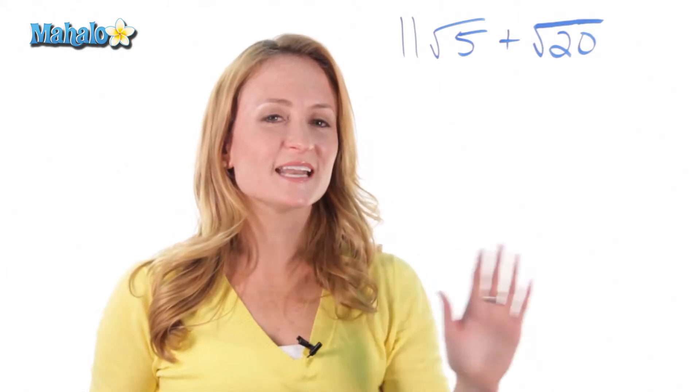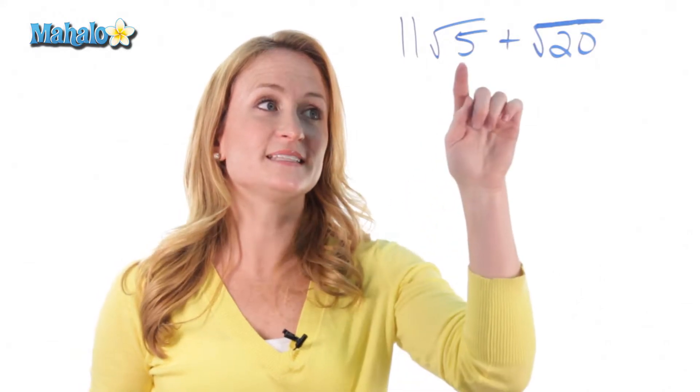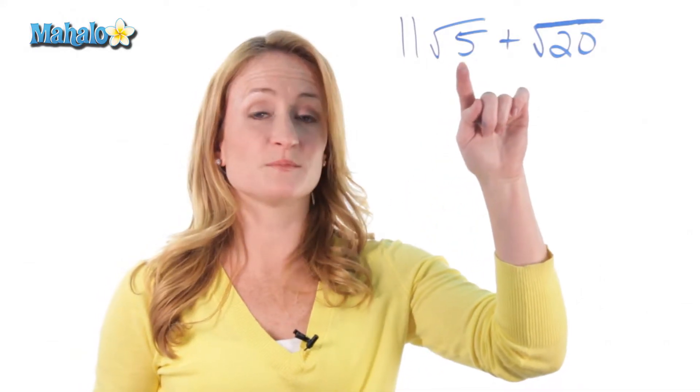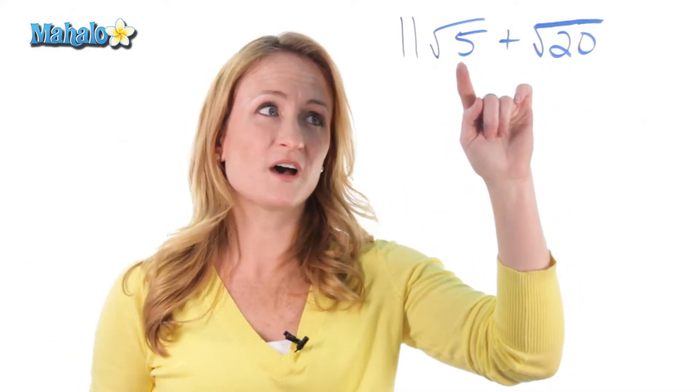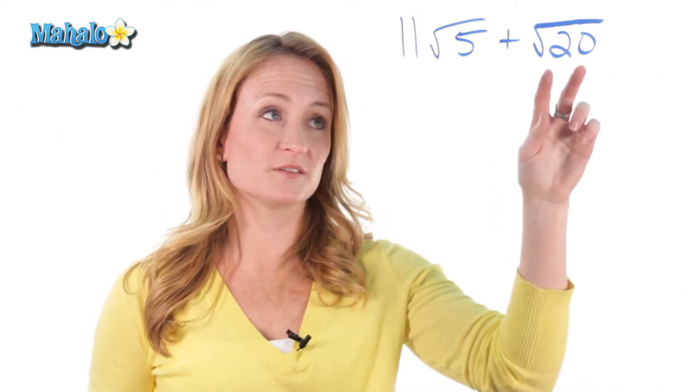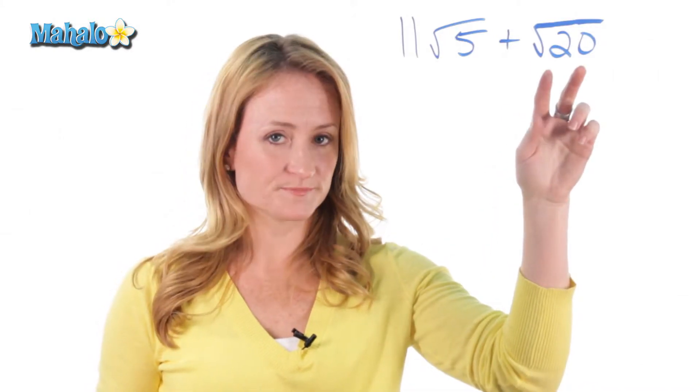It's not as intimidating as it looks. In fact, don't skip these problems in your homework because it's actually quite simple. Remember the rule is, in order to add two radicals together, they need to have the same number inside the root. So five is not the same as twenty. But can we break down this twenty further?